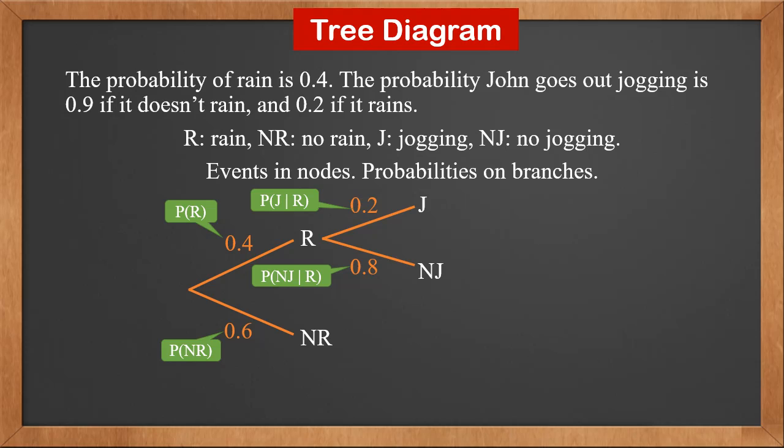If probability of jogging is 0.2, then probability of no jogging is 0.8. This is P(NJ|R).